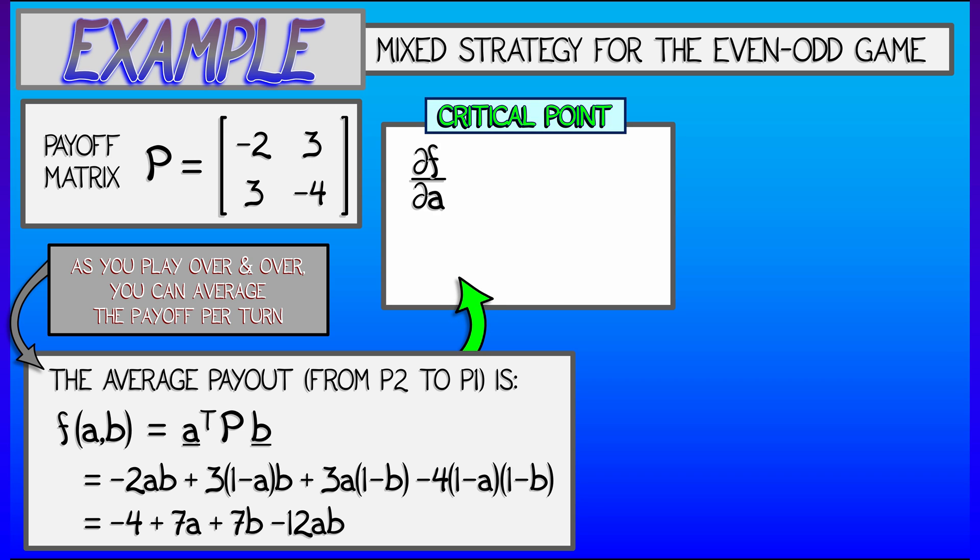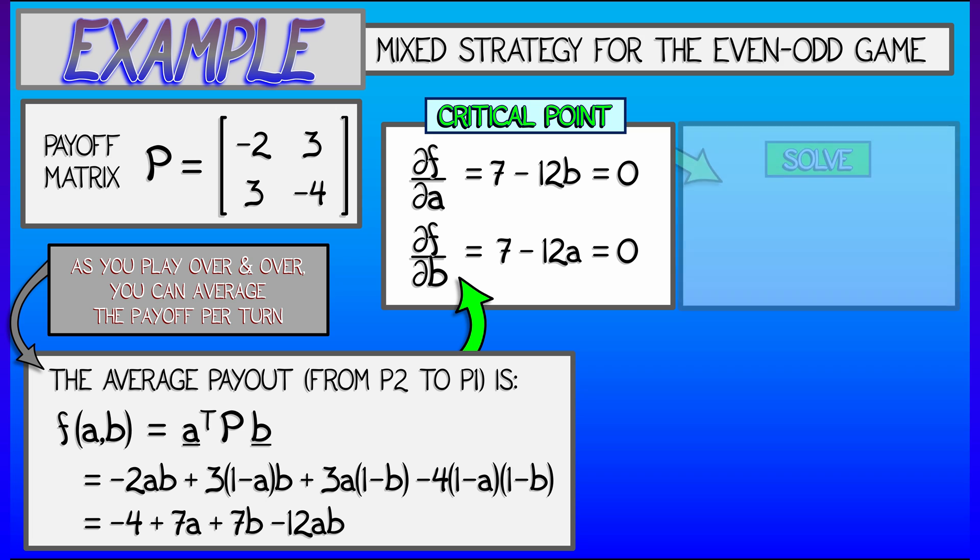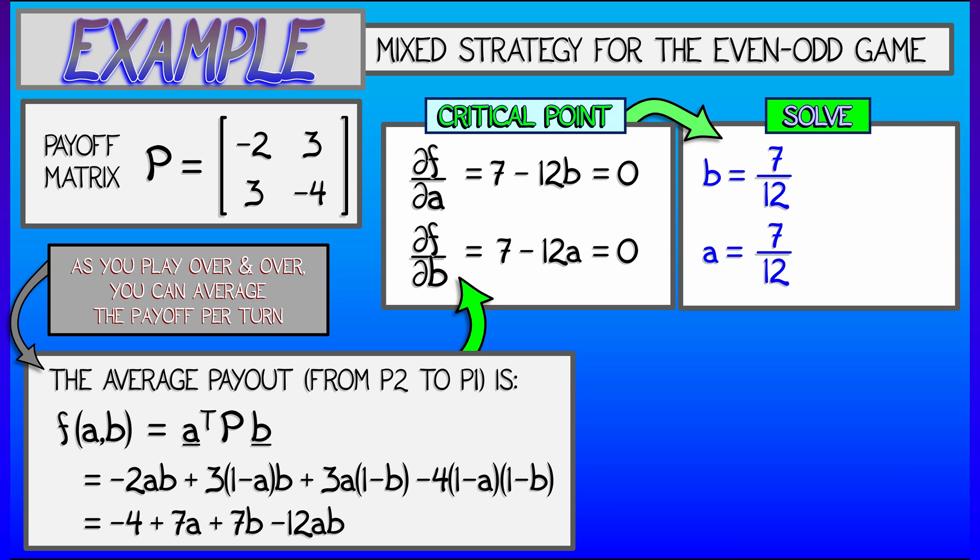Take the partial of this expected payout with respect to A and you're going to get 7 minus 12B. Easy. Set that equal to zero? Keep going. Partial of F with respect to B is 7 minus 12A. Set that equal to zero? Keep going. What do we do? Solve. Oh, this is easy. The first equation says that B is equal to 7 twelfths. The second equation says that A is the same thing, equal to 7 twelfths.